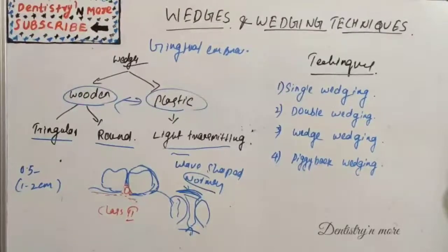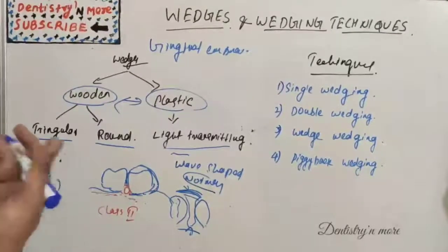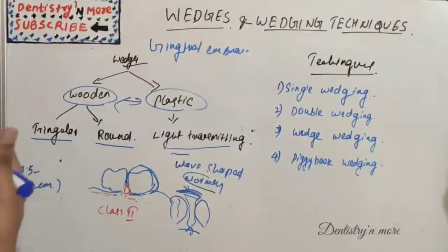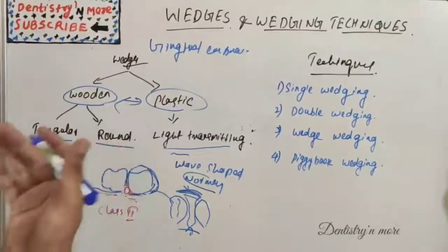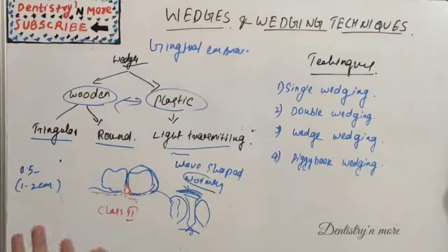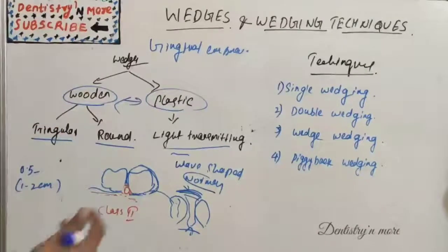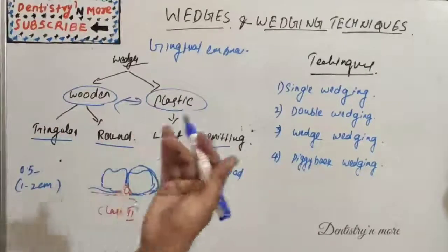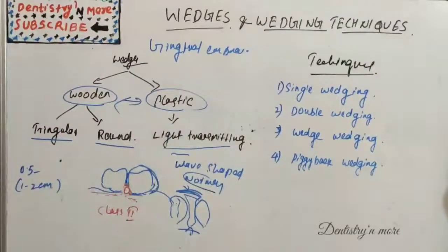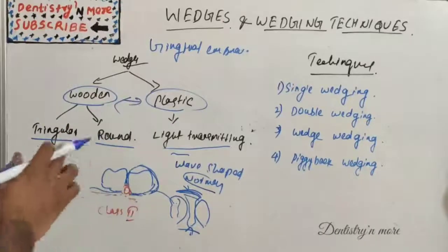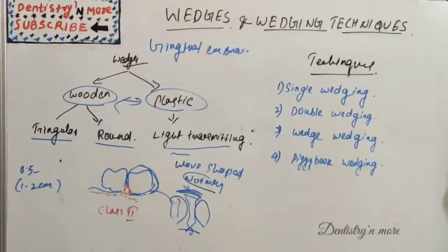Light-transmitting wedges transmit 90 to 95 percent of incident light and help in composite resin restoration, especially in the cervical part, because other types of wedges may hinder the process of polymerization.